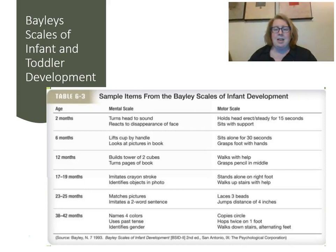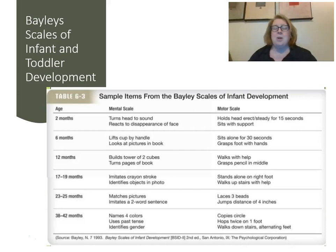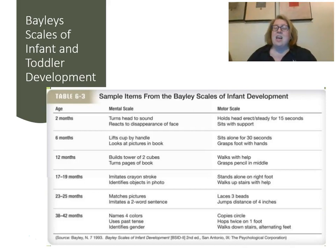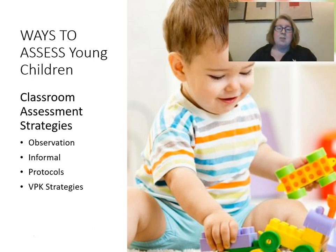The Bayley Scales include a mental/cognitive scale, a motor scale, a social scale, and a speech-language development scale. At 12 months, the cognitive scale might expect them to build a tower or turn pages of a book; the motor scale would check if they can walk or grab a pencil in the middle. The Bayley is really about the developmental progress of the child, and it's one way we can identify if a child is behind in these areas and refer them for special support services. We can also assess in the classroom through observations, informal protocols, and VPK checklists.